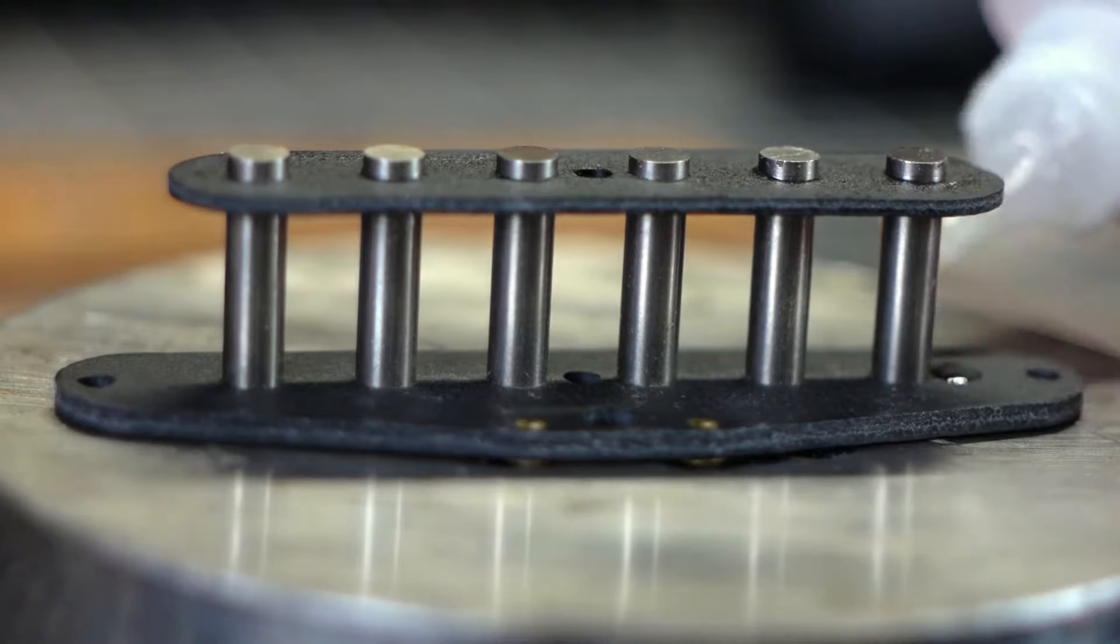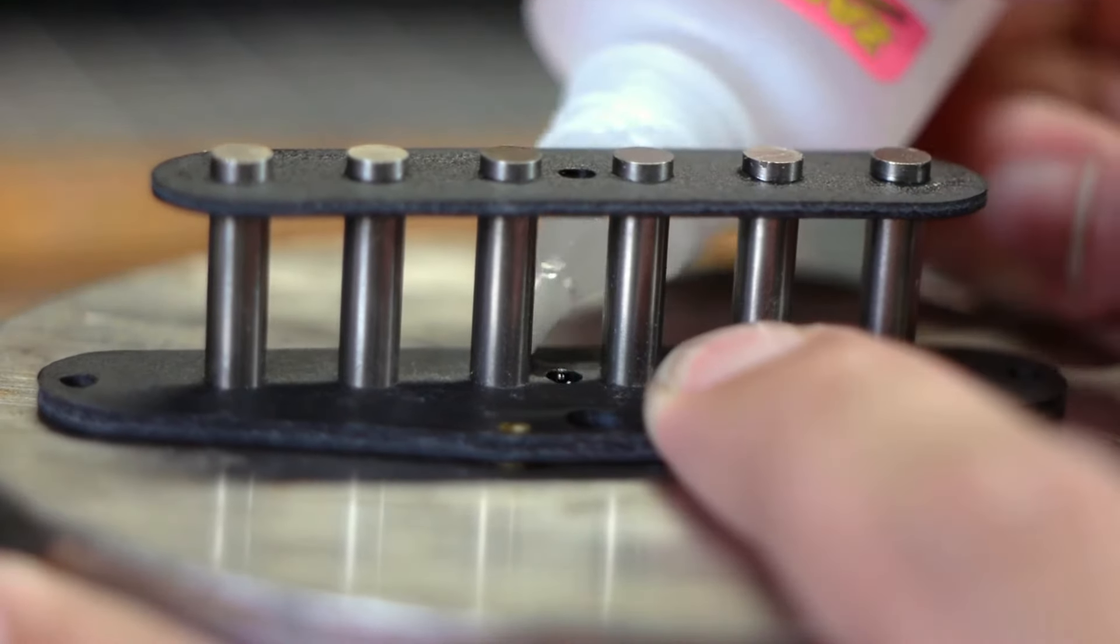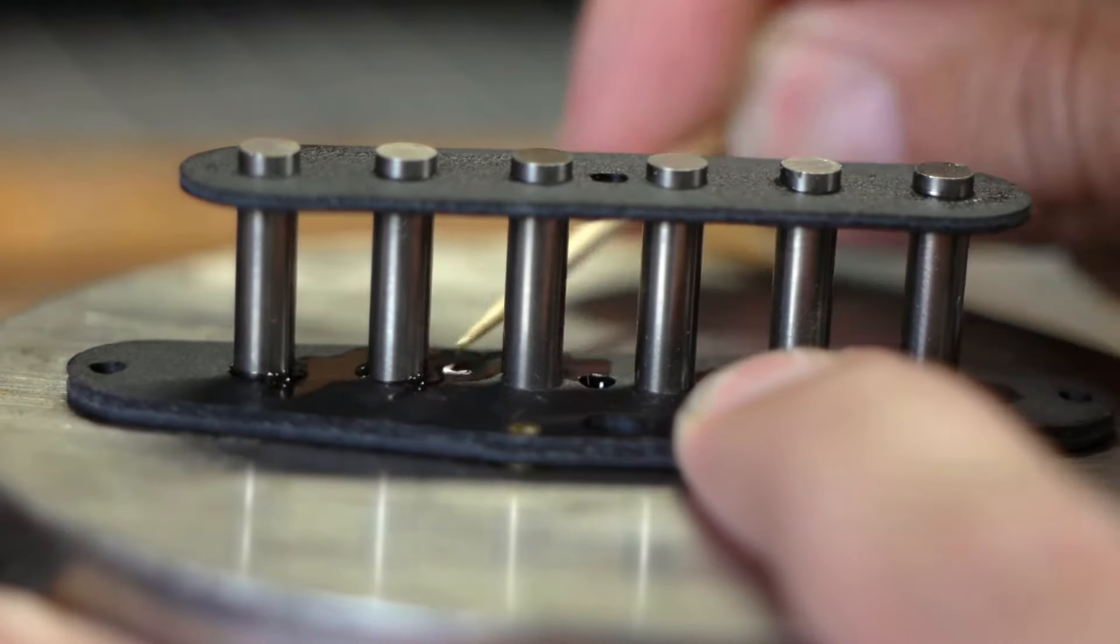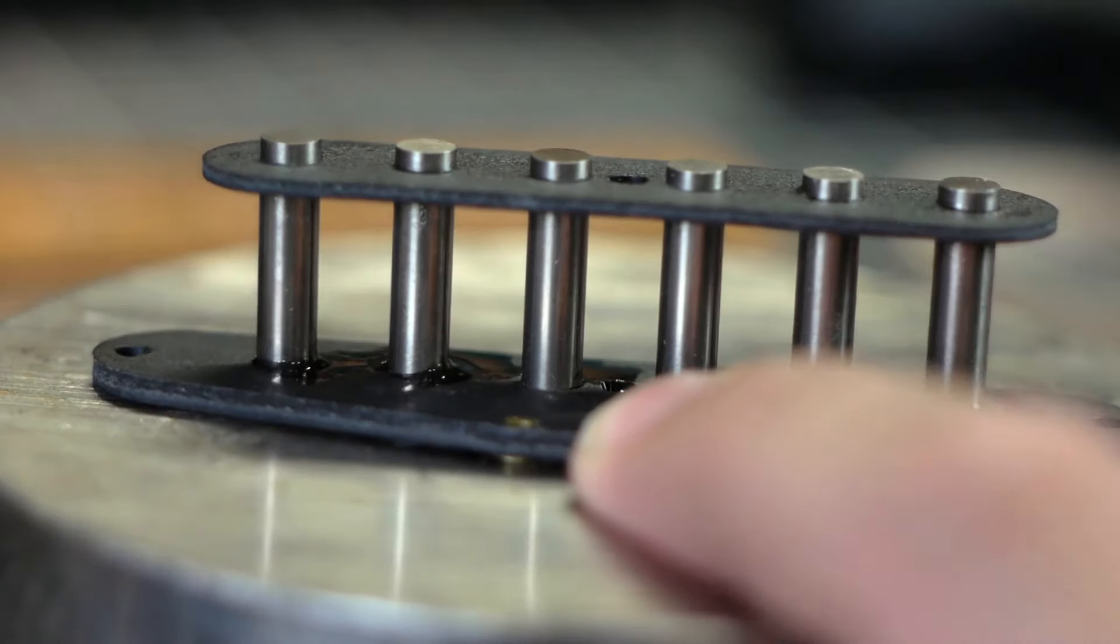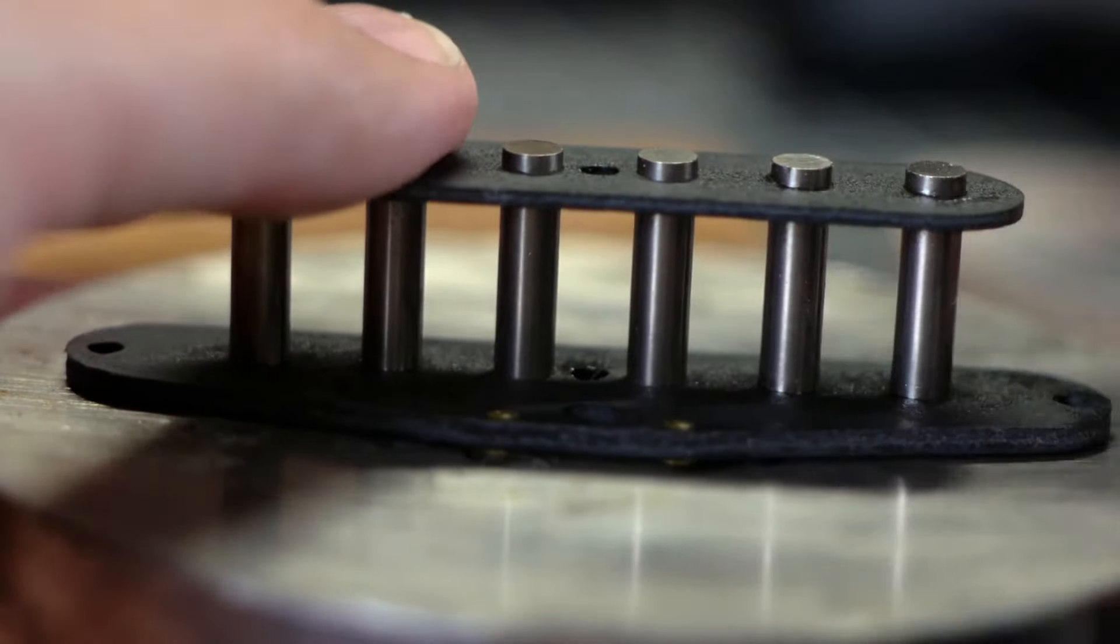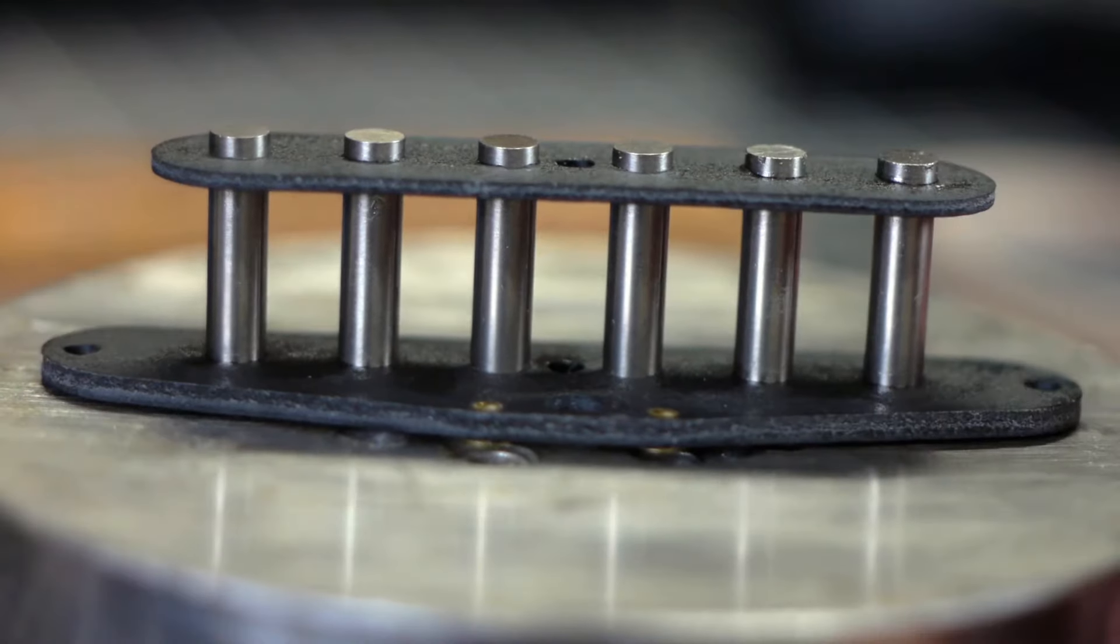Repeat the process on the bottom flatwork. For the bottom, I only glue one side. Keep in mind that the top flatwork was reamed and the bottom was not. The bottom flatwork piece is also considerably thicker than the top, holds the magnets more securely, and doesn't need as much reinforcing. The top flatwork is the most at risk for warping under the tension of the coil.